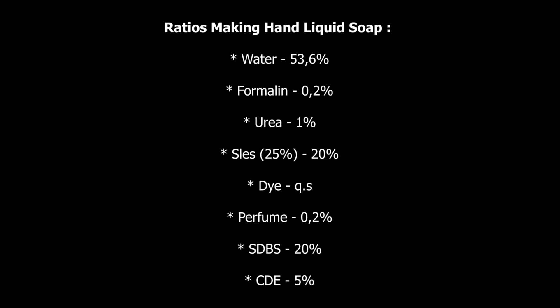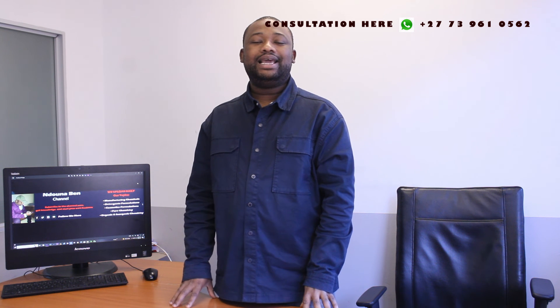The amount of water should be 53.6% of the total volume. Formalin: 0.2% of the total volume. UREA, which is your clarity agent: 1% of the total volume. SLES 25%: 20% of the total volume. Dye: QS — quantity sufficient, meaning you put the dye according to the appearance you want to give your product. Perfume: 0.2%. SDBS: 20%. CDE: 5%.